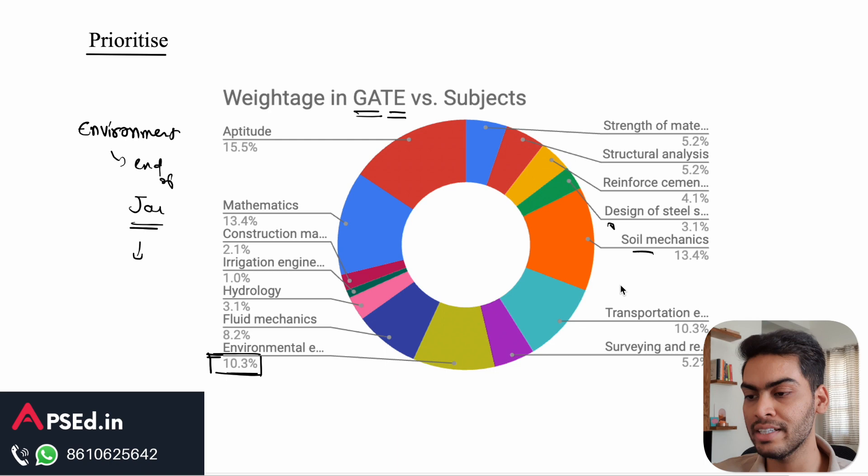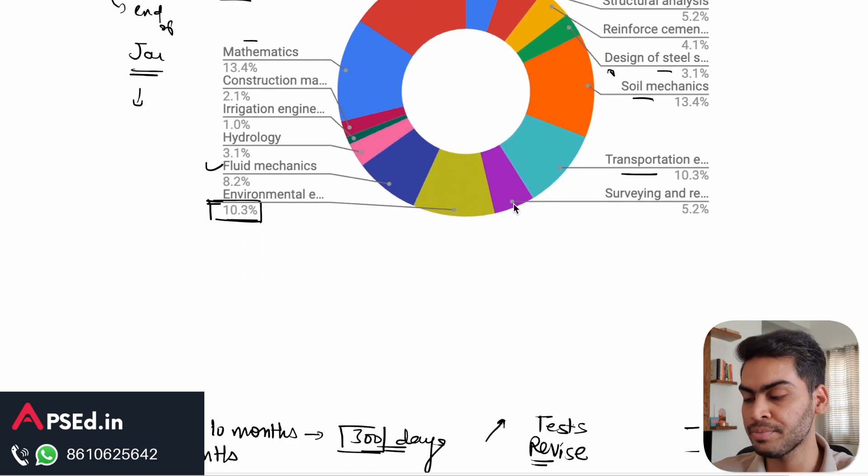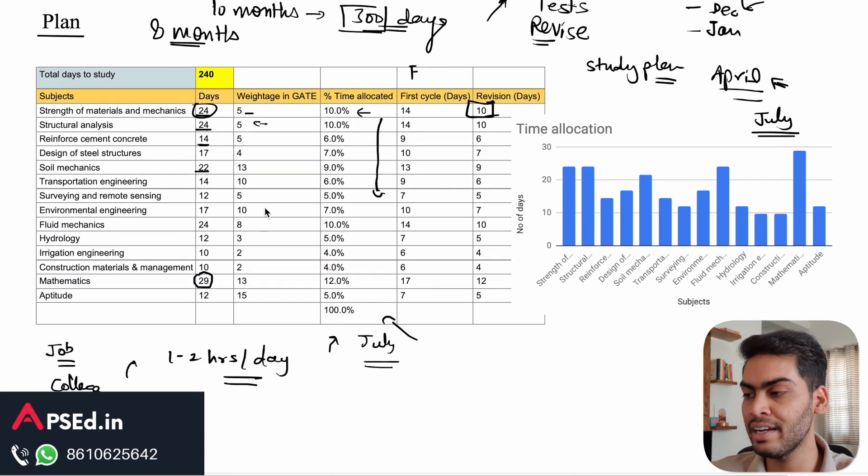You need to prioritize the subject and study them in advance. Environment, soil, transportation, maths, aptitude, and fluid are the subjects you need to prioritize and not leave until the end. Here you can see the weightage of these different subjects and based on that allocate or prioritize those subjects first.